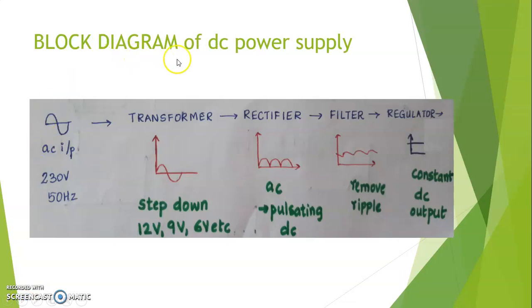This is the basic block diagram of a DC power supply. The AC input source is 230V 50Hz. The transformer will step down the voltage from 230V to the required rating, i.e., 12V, 9V, 6V, etc.